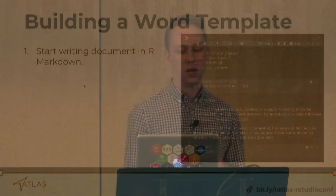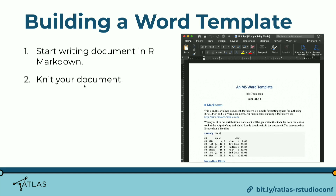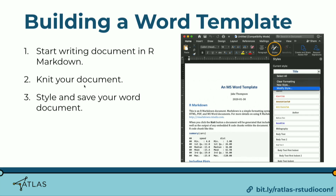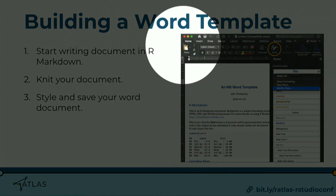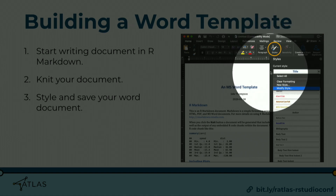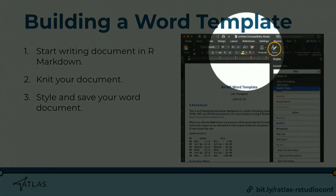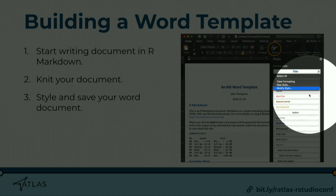The easiest way to do this with Microsoft Word is to start writing your document in R Markdown just like you would any document, and then once you have a bit, hit the knit button. What you'll get is an output using the default Microsoft Word template — nice, but not exactly what we want. Then you click your cursor into a section of the document — for example, the title — click the styles pane up top, and you'll see exactly what style the default template has assigned. If we're in the title, it'll say we're in the title style.